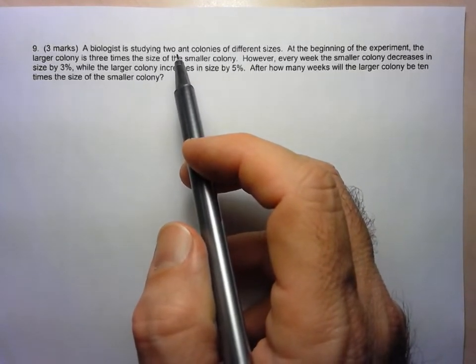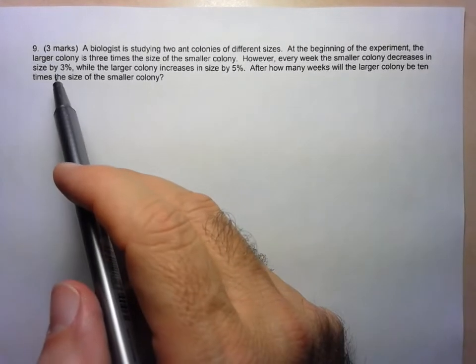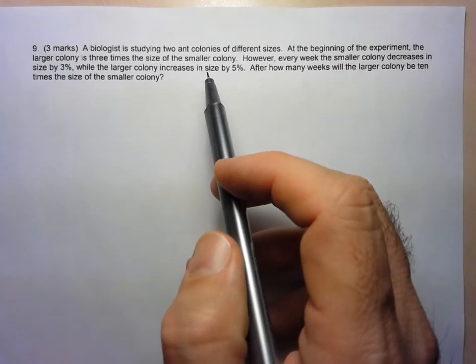So there's a relationship between their initial sizes. But the smaller one decreases 3% every week while the larger colony increases by 5% every week.